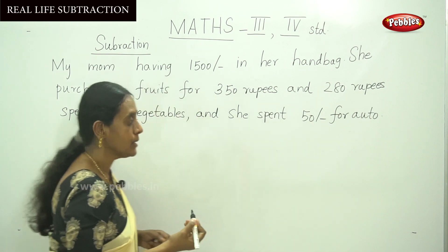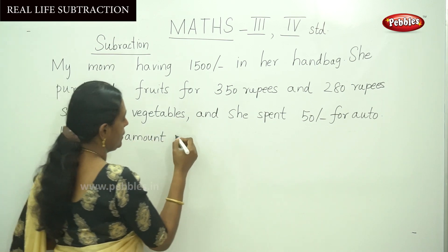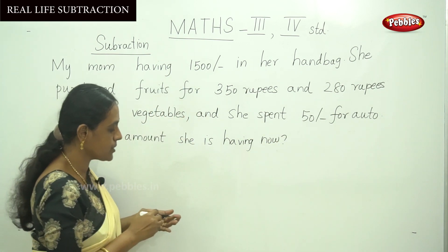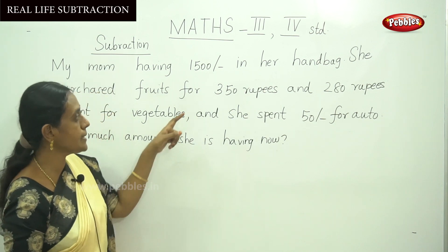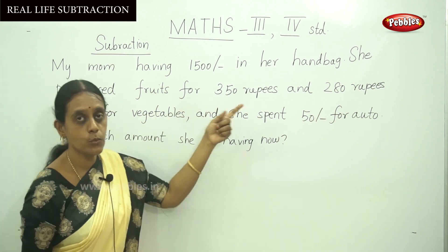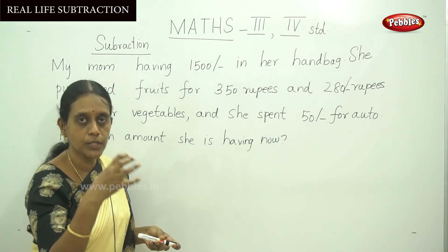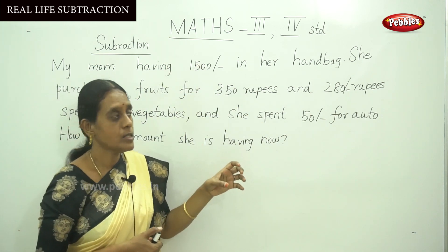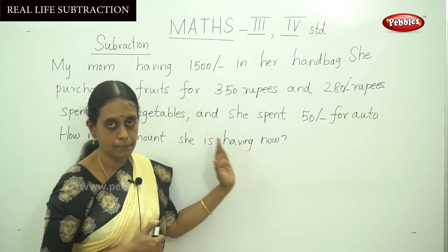How much amount is she having now? This is a real life situation sum. The total amount is 1500. You have to add the numbers 350, 280, and 50 — the money spent for fruits, vegetables, and auto. Find out the total spent amount, then subtract that total from 1500 to find the remaining difference amount.